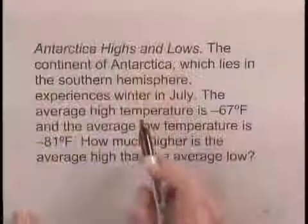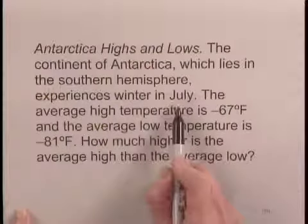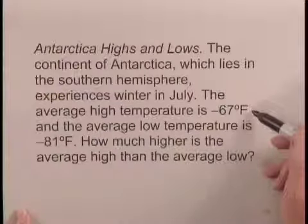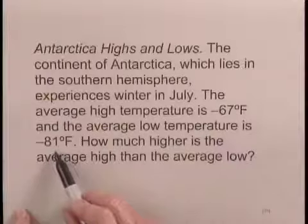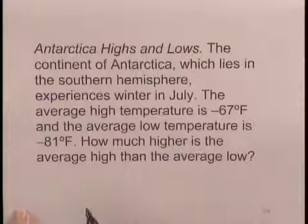This exercise deals with temperature extremes. The continent of Antarctica, which lies in the southern hemisphere, experiences winter in July. The average high temperature is negative 67 degrees Fahrenheit and the average low temperature is negative 81 degrees Fahrenheit. How much higher is the average high than the average low?